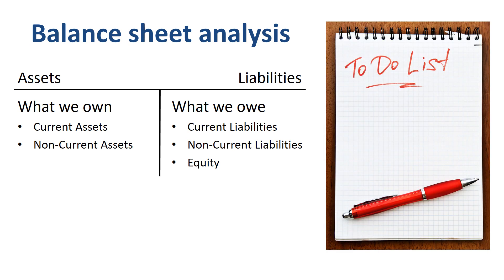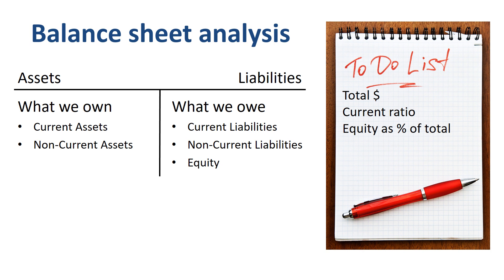When I analyze a balance sheet, there are several things I always check for each company I look at: the balance sheet total, which should be the same left and right — what a company owns equals what a company owes; the current ratio, a good indicator of a company's liquidity; and equity as a percentage of the balance sheet total, which gives an indication of how the company is financed and what its level of robustness is. Then I look specifically at several items on the asset side and several items on the liabilities and equity side.